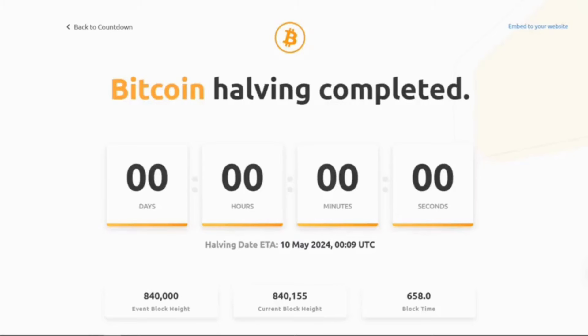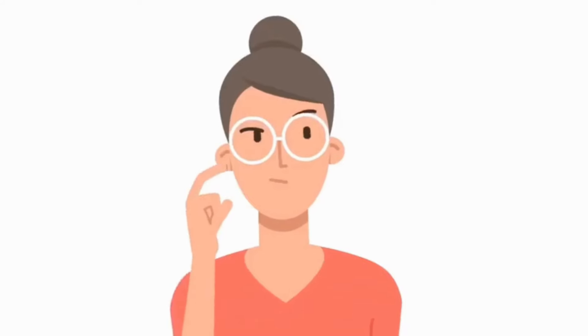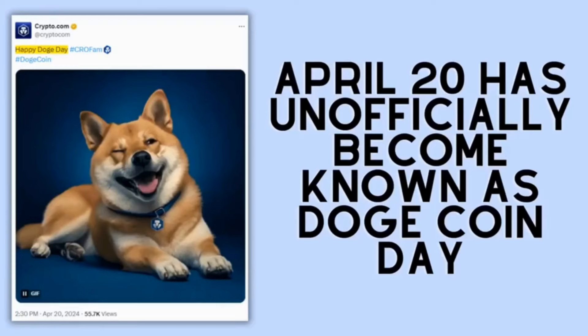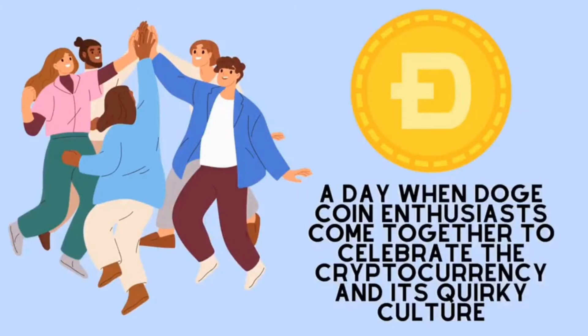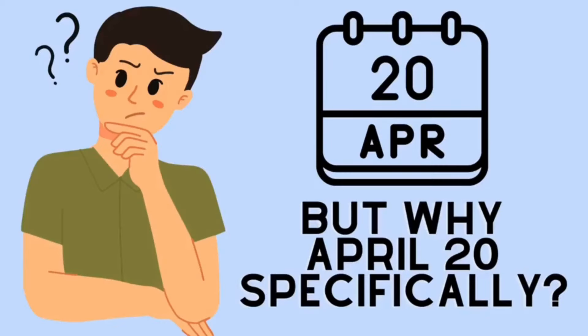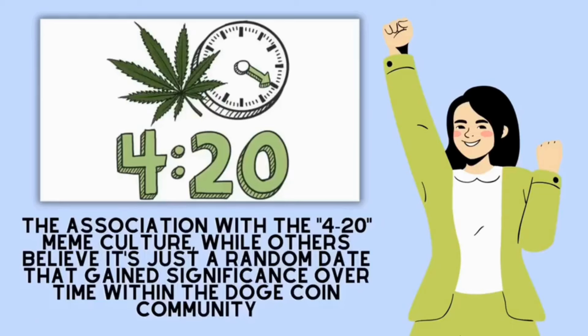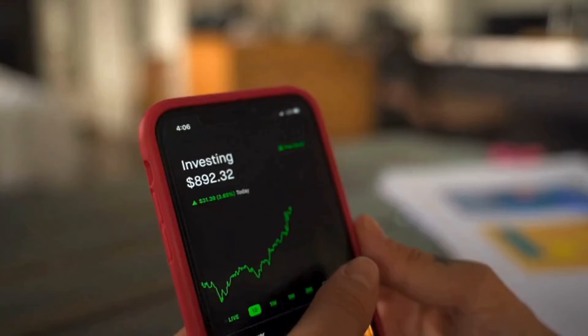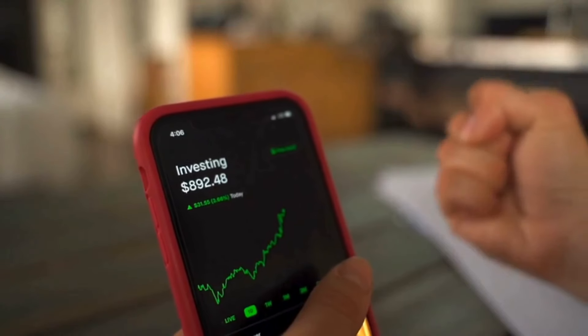April 20th was not only a Bitcoin halving day, but also a big day for Dogecoin. It's because April 20th has unofficially become known as Dogecoin Day. Essentially, it's a day when Dogecoin enthusiasts come together to celebrate the cryptocurrency and its quirky culture. But why April 20th specifically? Some say it's because of the association with the 420 meme culture.